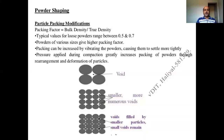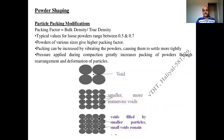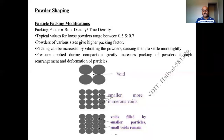Here we have particle packing modification. We were talking about the packing factor, and the typical values for loose powders range from 0.5 to 0.7. Powders which have various sizes will have a high packing factor. Packing can be increased by vibrating the powder, causing them to pack a little more tightly. The pressure applied during compaction greatly increases the packing of powders through rearrangement and deformation of particles. So today, we are going to continue with the same thing — powder shaping.